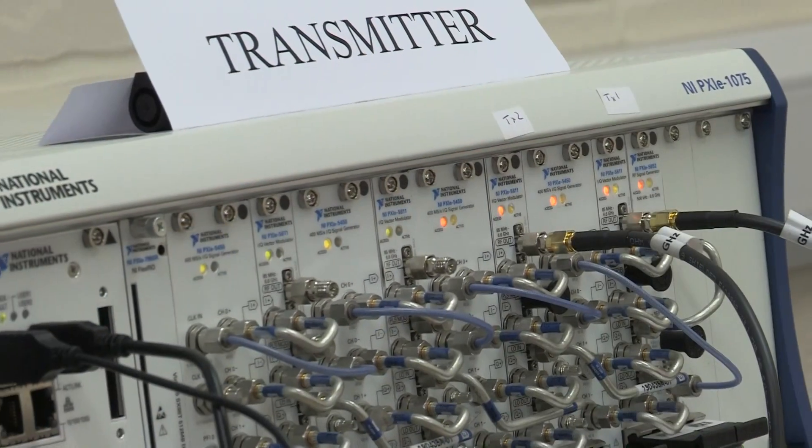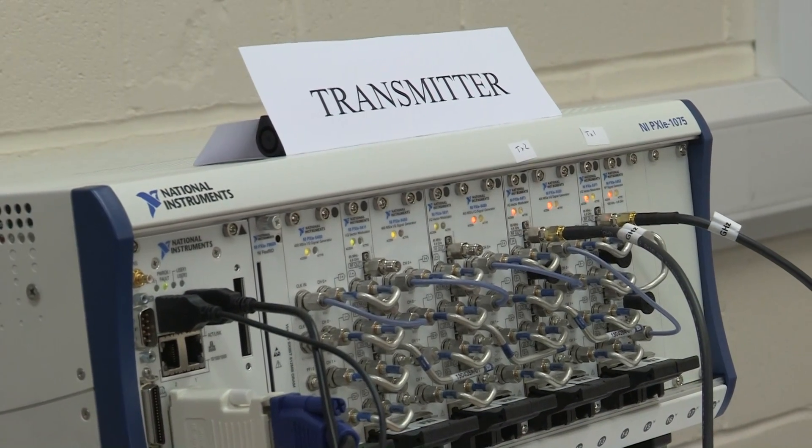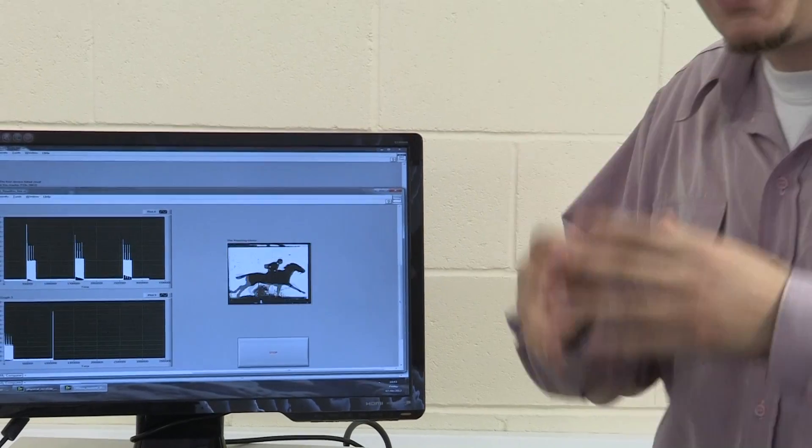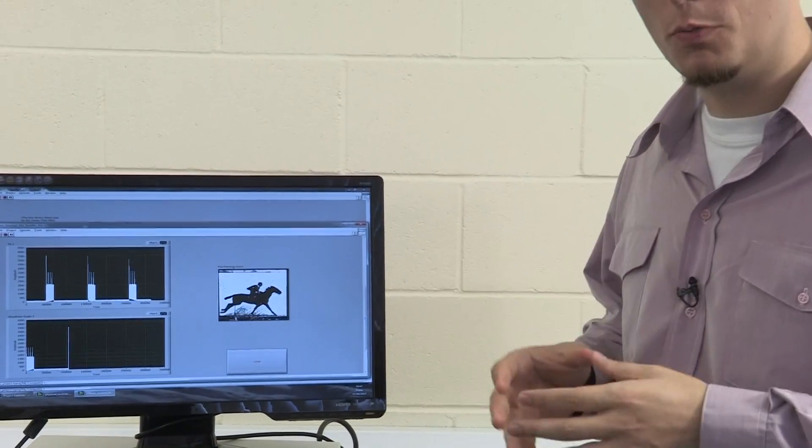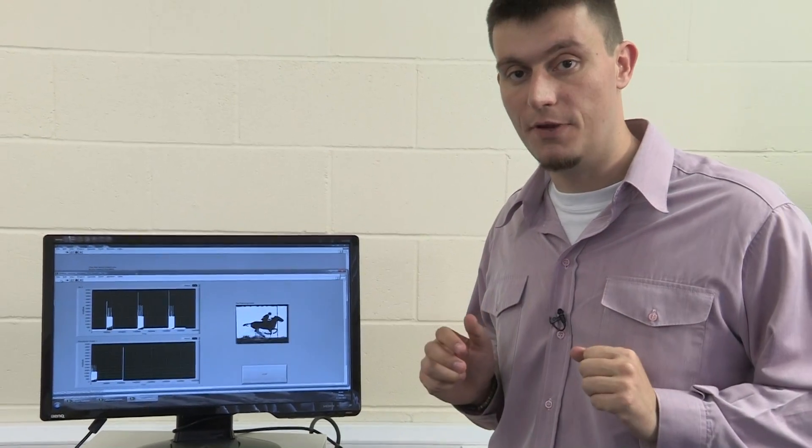Indeed, each component used at the transmitter and receiver is not identical. In particular, each has certain imperfections, which make the paths of the rays distinguishable and unique, even when the outside environment is unfavorable.